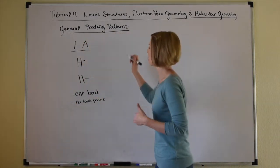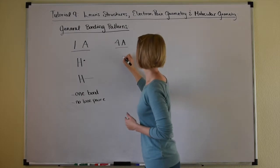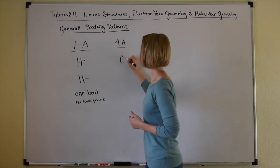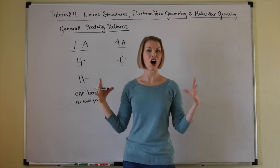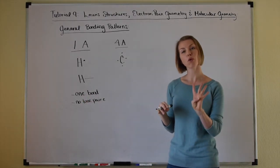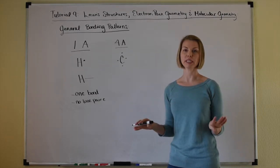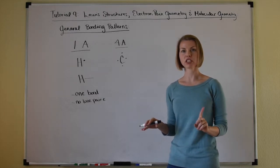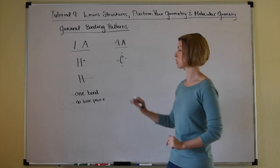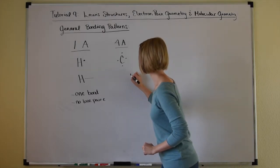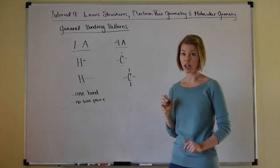The non-metal in group 4A is carbon. As the group number implies, it has four valence electrons. Carbon, wanting to achieve octet, will share all four of its valence electrons in covalent bonds, keeping no lone pairs to itself. That's the general pattern — there are very few exceptions, like carbon monoxide. So carbon typically forms four bonds total with no lone pairs.